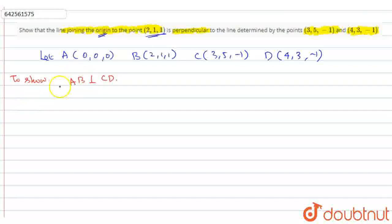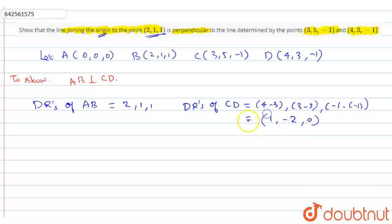Before that, we are going to find the direction ratios for these two lines. The direction ratios of AB equal the difference between each coordinate. Since A is the origin, it will be 2, 1, 1. The direction ratios of CD: 4 minus 3 is 1, 3 minus 5 is -2, and -1 minus (-1) is 0. So DR of CD is (1, -2, 0).